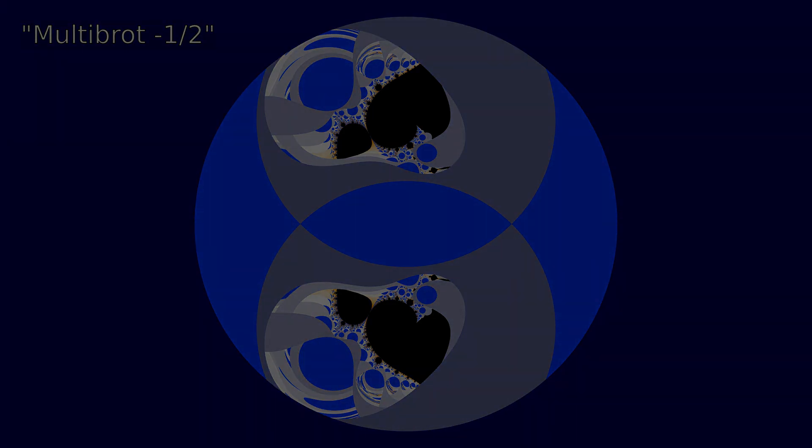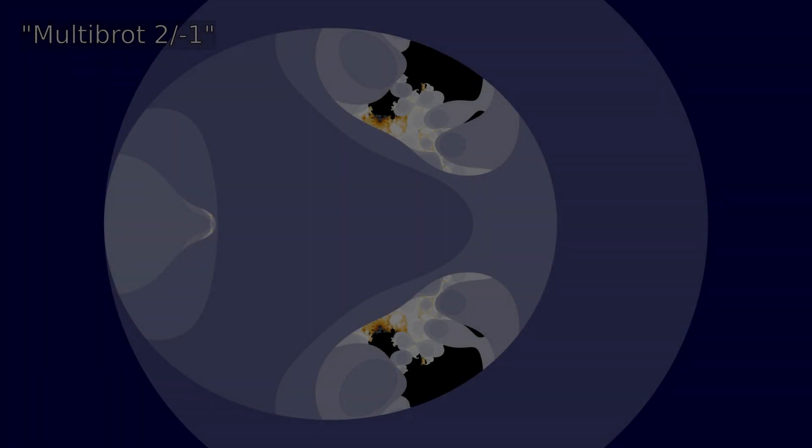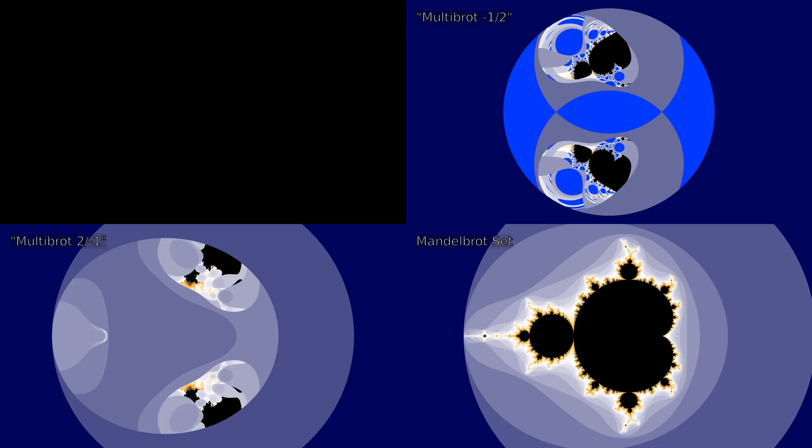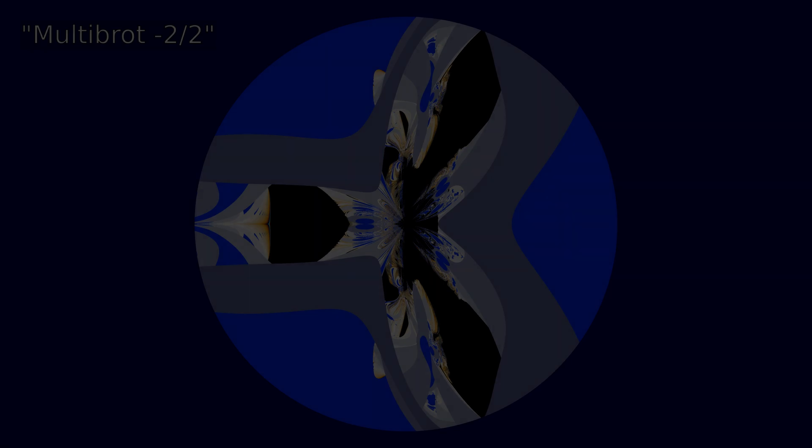This one is a combination of multibrot minus one and two. This one is two and minus one. And here you can see how they share elements with the normal Mandelbrot.